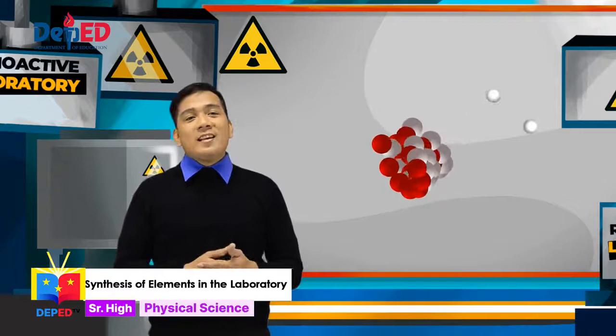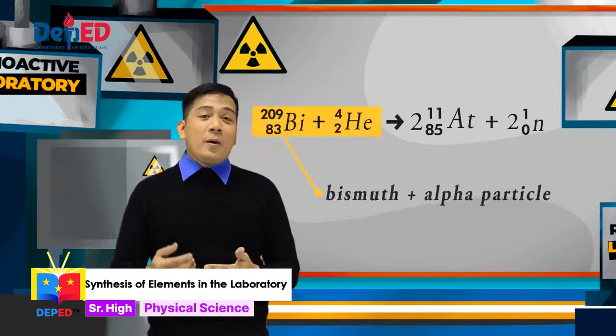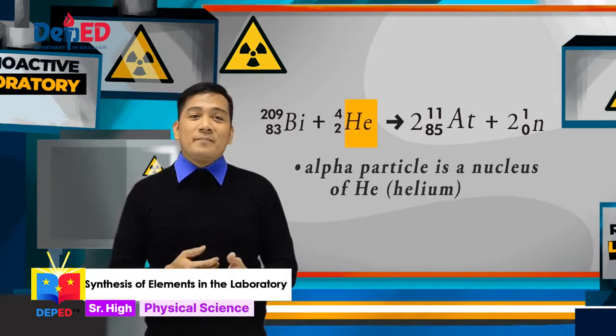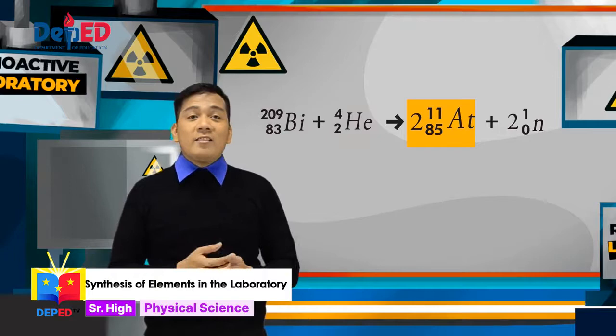We can also see the process by just looking at the equation. Bismuth and alpha particle were added together. Notice that for alpha particle, we used the symbol HE. This is because alpha particle is technically a nucleus of helium. We can also use the Greek letter alpha to symbolize alpha particle. The collision of both resulted to the absorption of two protons which increased the atomic number from 83 to 85 and the emission of two neutrons.